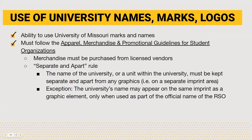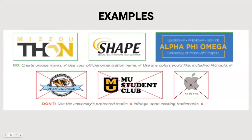As an RSO, you have the ability to use University of Missouri marks and names. However, you must follow the apparel, merchandise, and promotional guidelines for recognized student organizations, and merchandise must be purchased from licensed vendors. RSOs must also follow the separate and apart rule, where the name of the university or a unit within the university must be kept separate and apart from any graphics. Good logo examples use Mizzou branding colors, have unique marks, and use the RSO's official name. Bad examples include using university-protected marks such as the athletics tiger head and the stacked MU logo, which cannot be used by RSOs and infringe upon existing trademarks. Contact ORG to review your logo if you're unsure it meets branding guidelines.